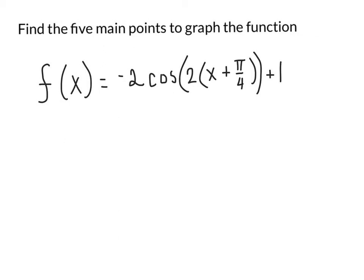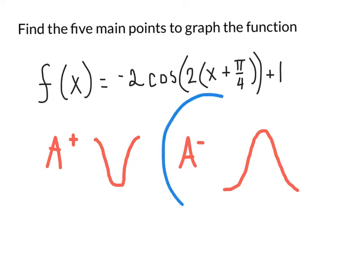Before we start finding our points, one thing that I like to do is I always like to take a look at the a value to see the general shape of the curve that the five points should give me. Remember in a cosine function, if a is a positive value, we start at a maximum, we travel down to the minimum, and then back up to the maximum using our five points. But if a is a negative value, we start at a minimum, we travel to the maximum, and back down to the minimum. So it looks like for this particular function that we're graphing, we're going to be using this idea for the general sketch of our function.